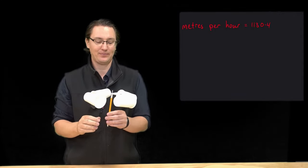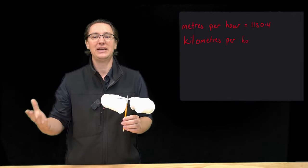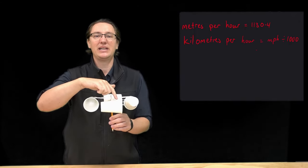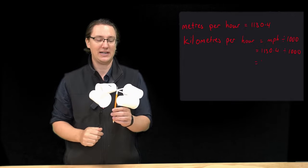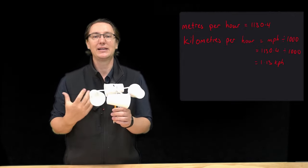Now to turn that into kilometers per hour I need to divide meters by a thousand, which gives me 1.13. So I've got a very gentle wind speed today of 1.13 kilometers per hour.